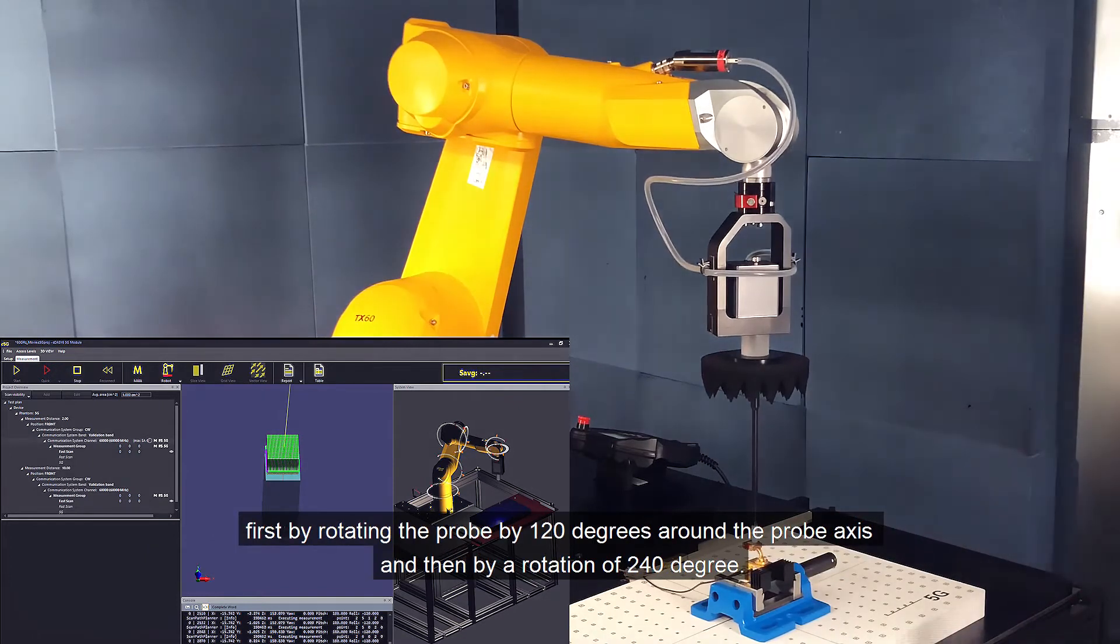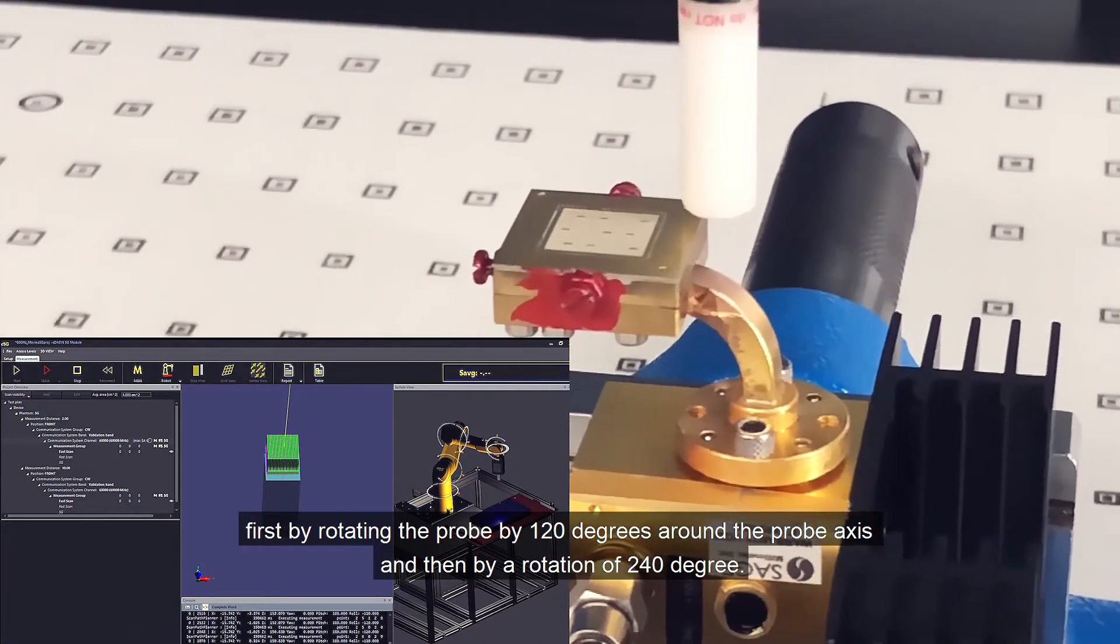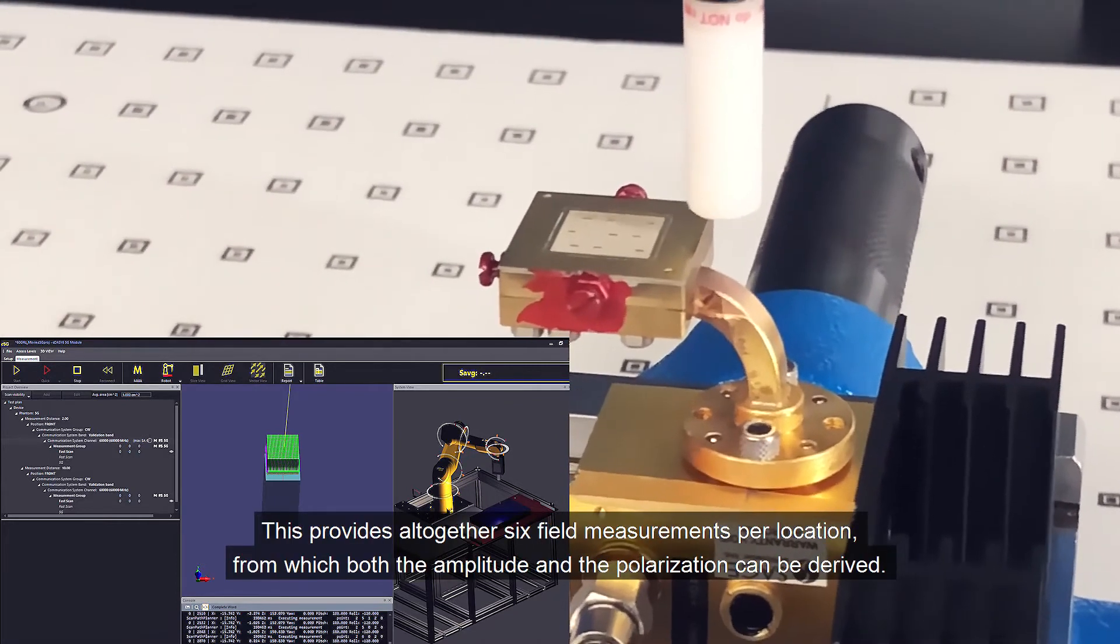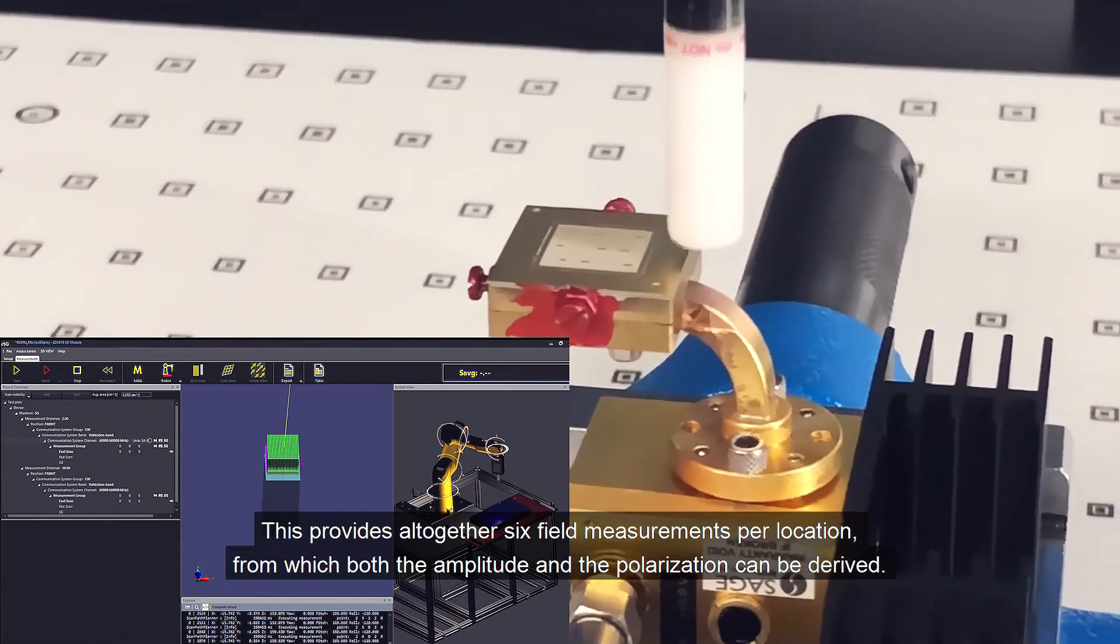First, by rotating the probe by 120 degrees around the probe axis and then by a rotation of 240 degrees. This provides altogether six field measurements per location from which both the amplitude and the polarization can be derived.